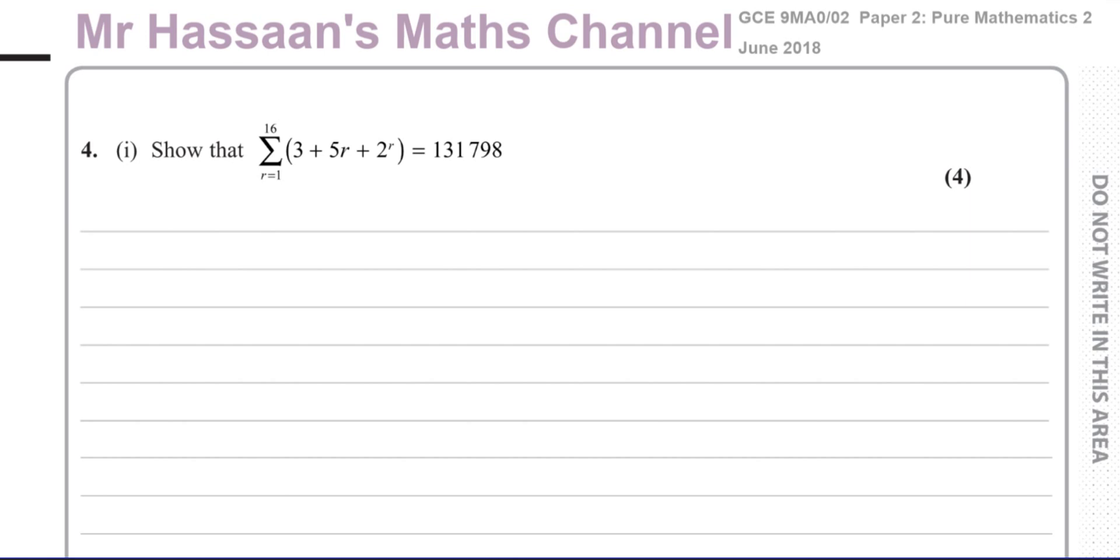This question is about sigma notation. It means find the sum of this expression when you replace R with 1, then with 2, then with 3, then with 4, then with 5, all the way to 16, and show that it becomes this.